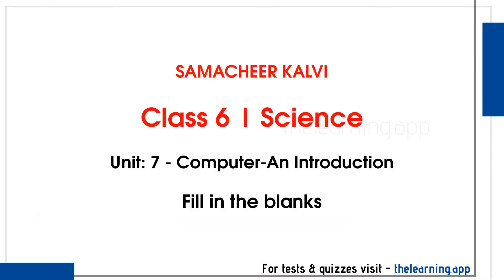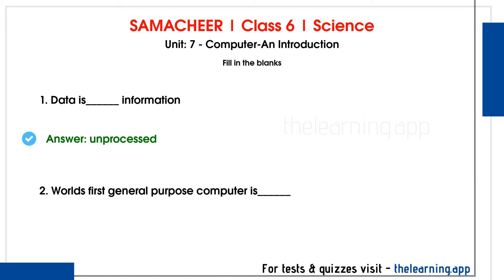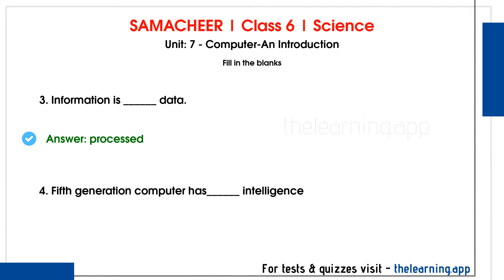Next, Fill in the Blanks. First question: Data is _____ information. The correct answer is Unprocessed Information. Second question: The first general purpose computer is _____. The correct answer is Abacus. Third question: Information is _____. The correct answer is Processed Data. So, Data is Unprocessed Information and Information is Processed Data.